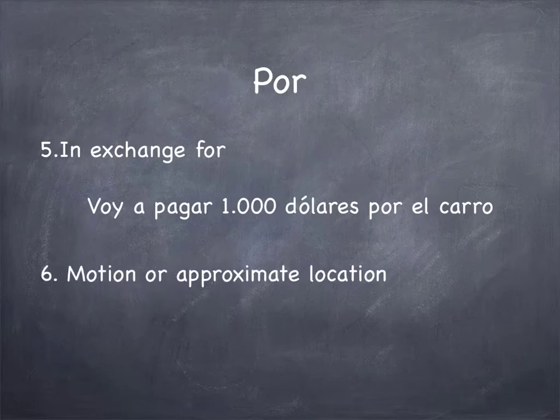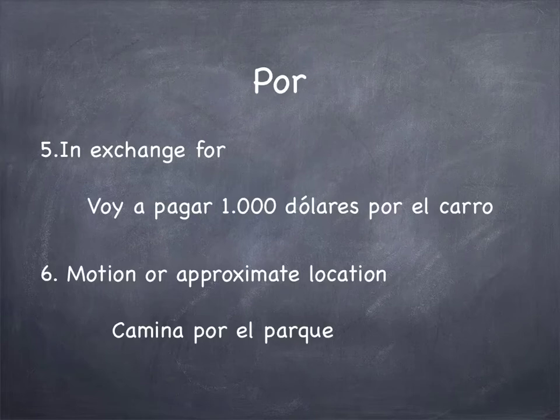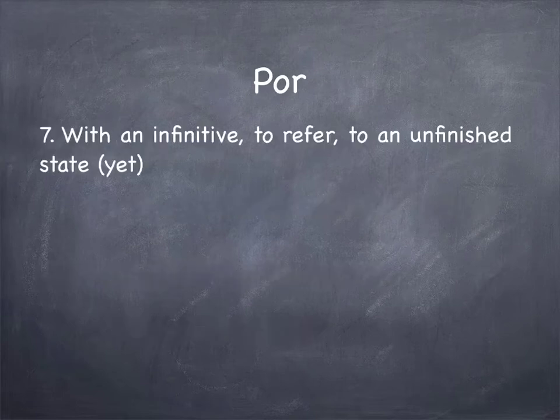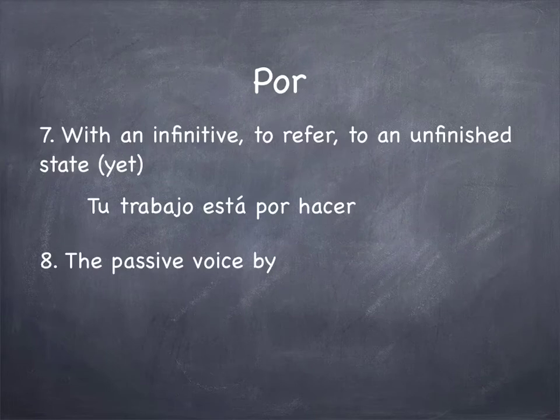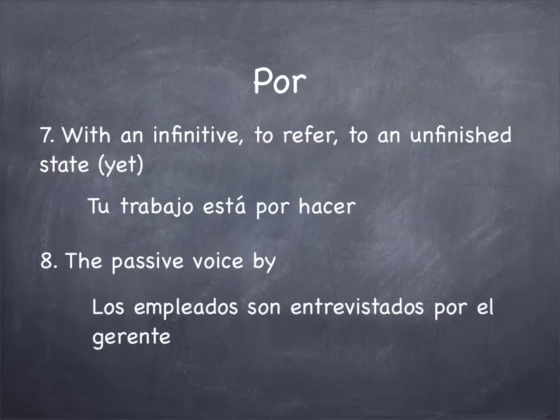Every time we talk about motion or approximate location: Camina por el parque, meaning he or she walks around the park. We also use por with an infinitive to refer to an unfinished state, or something yet to be finished: Tu trabajo está por hacer, meaning your work is yet to be done. Finally, por is used with the passive voice and means by: Los empleados son entrevistados por el gerente — the employees are interviewed by the manager.